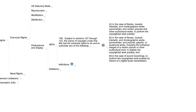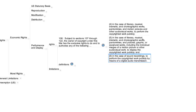The primary provisions are subsections 4, 5, and 6 of section 106. Subsection 4 gives the owner of the copyright in a literary, dramatic, musical, choreographic, pantomime, or audiovisual work the exclusive right to perform that work publicly.